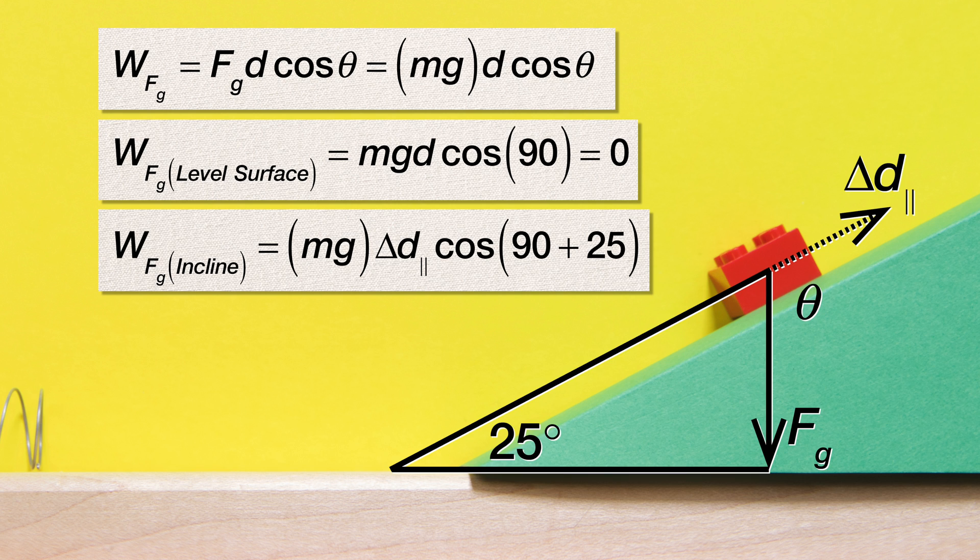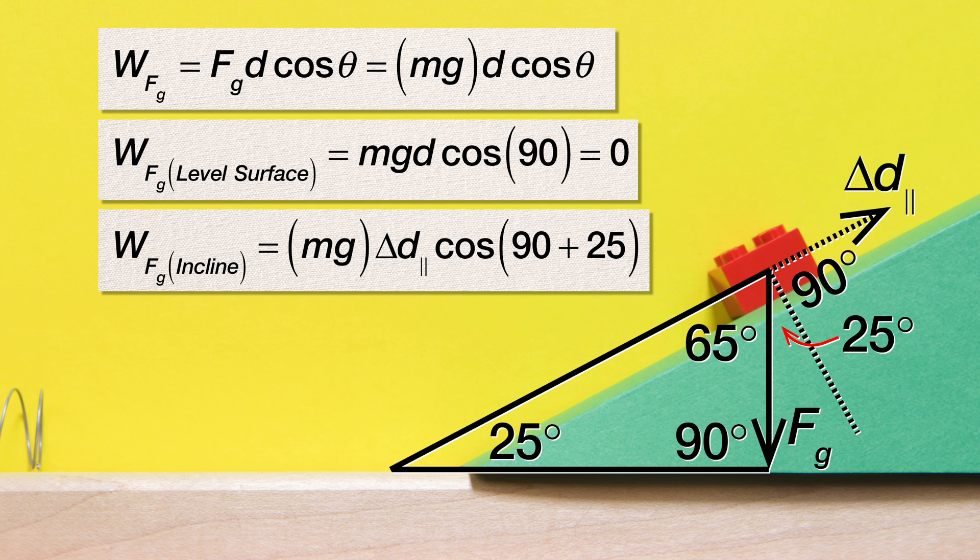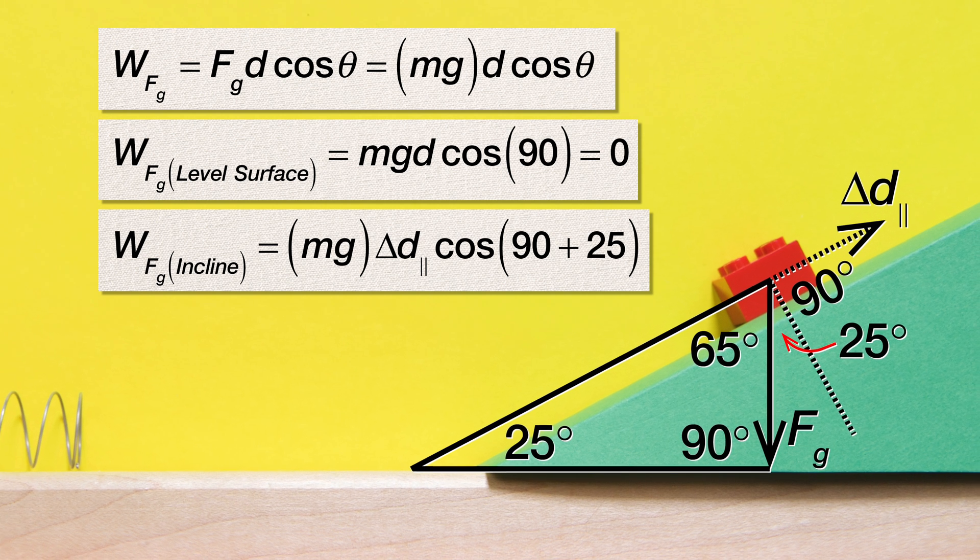We know that because the incline angle is 25 degrees and forms a right triangle with the force of gravity. Because the interior angles of a triangle add up to 180 degrees, that means this angle is 65 degrees. If we draw a line normal to or at a 90 degree angle to the incline, we know this angle is the same as the incline angle or 25 degrees. Hence, the angle between the force of gravity and the displacement of the block is 90 plus 25 or 115 degrees.